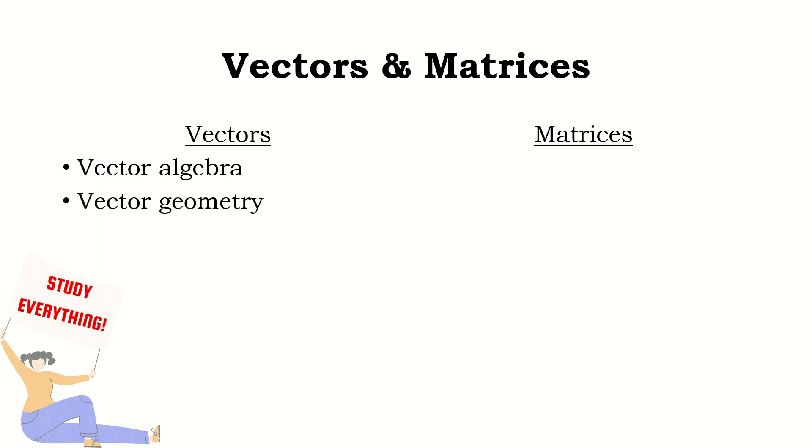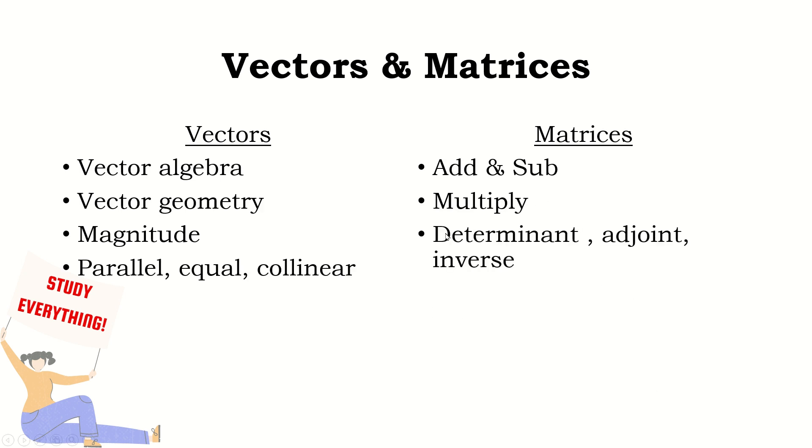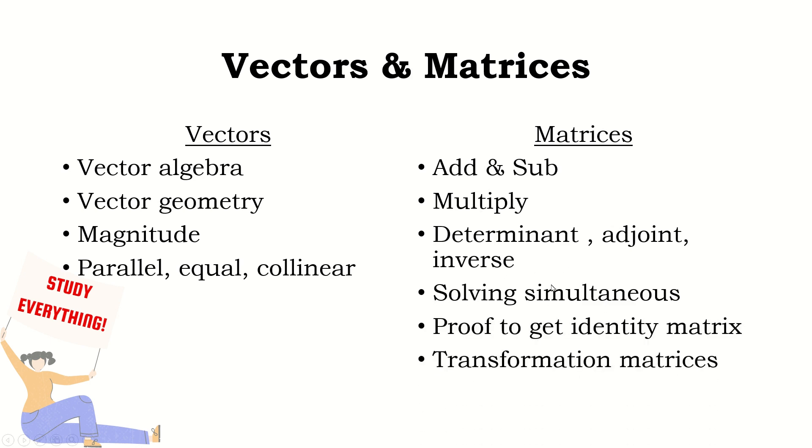Your vector geometry will look at a vector diagram. Apply the rules of your triangle law and your parallelogram law to calculate and define the vector PM given that they give you PB plus BM, something like that. Also be able to find the magnitude of your position and displacement vector, be able to tell why a vector is parallel or collinear. For matrices: add and subtract matrices, multiply your matrices, find the determinant of a two by two matrix, the adjoint, the inverse of a two by two matrix, solving simultaneous equations, transformation matrices. This is a short 12 marks.